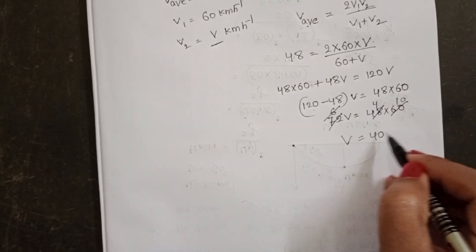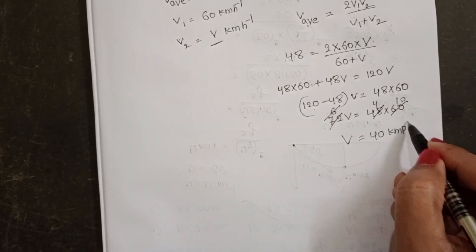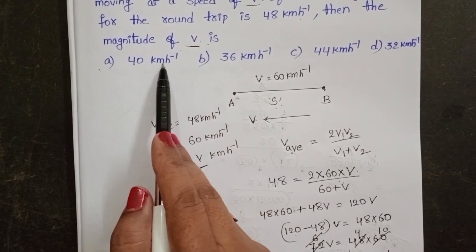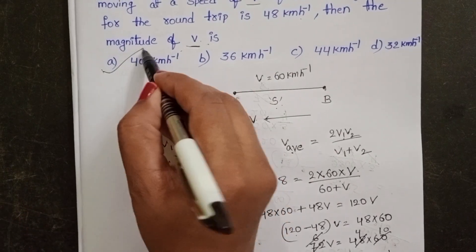V equals 40 km per hour. The magnitude of V is 40 km per hour. First option is correct.